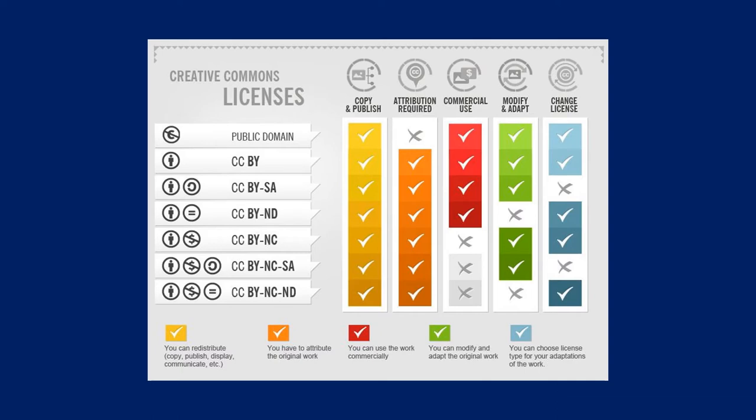By tagging a work with a Creative Commons license, the creator is telling future users how they can use that work. If a work is licensed as CCBY, like this presentation, that means you are free to reuse, revise, remix, retain, and redistribute the work to your heart's content. The creator only asks that you give them credit with an attribution. There are a whole suite of licenses that best suit different types of work, but for OER, more open is always better.